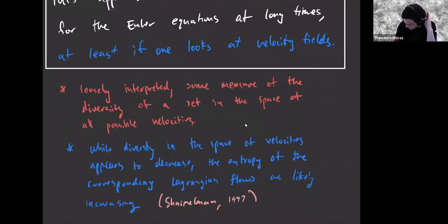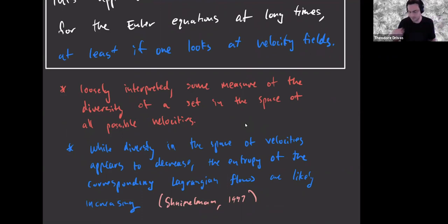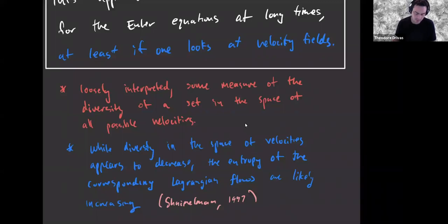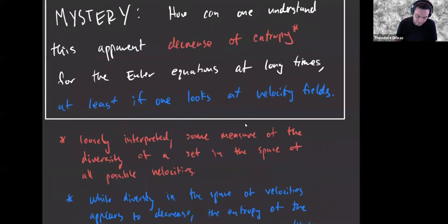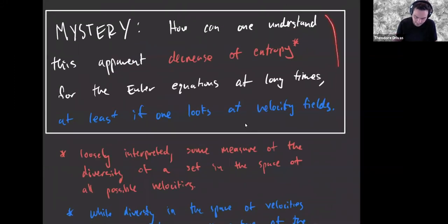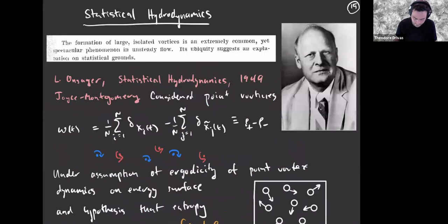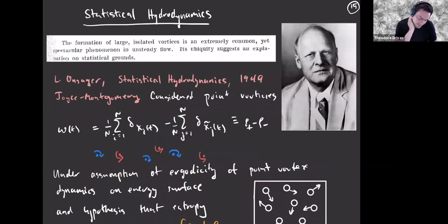I want to point to a paper by Shnirelman in the 90s, where he exhibits a Lyapunov function for the vorticity dynamics but in the Lagrangian picture. A Lyapunov function is some indication of irreversibility. Indeed, there is such a thing, but you have to look at the trajectories to see it. The remaining talk will be about some aspects of this.